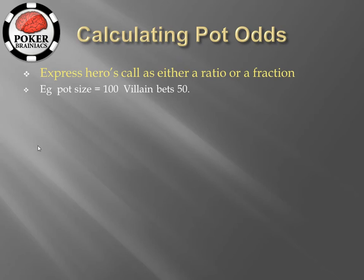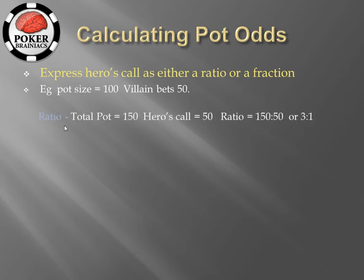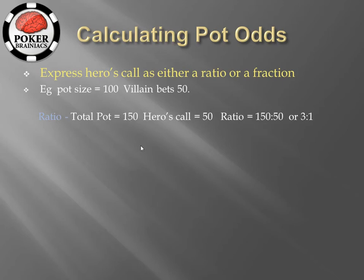Let's look at an example using both the ratio and the fraction method. The pot size is 100 and villain bets 50. With the ratio method, the total pot is 150 — that's the pot size plus villain's bet. Hero needs to call 50 to continue, so we express 150 and 50 as a ratio: 150 to 50, or 3 to 1 in its most simplified form. People will use the expression that you are getting 3 to 1 on a call in this situation.